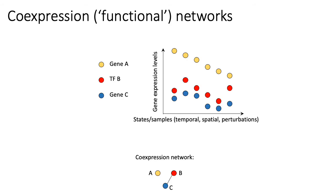The next type of network we'll talk about are called co-expression networks, or what are sometimes known as functional networks. Each gene is represented by a single node in this graph, and two nodes are connected by an edge if they are co-expressed or tend to have similar expression patterns. By similar expression patterns, I mean that we measure the gene expression levels of all the different genes in the genome across different samples, which could represent samples from a single organism taken over time, across different regions of a tissue, or under different perturbations of a single type of sample.